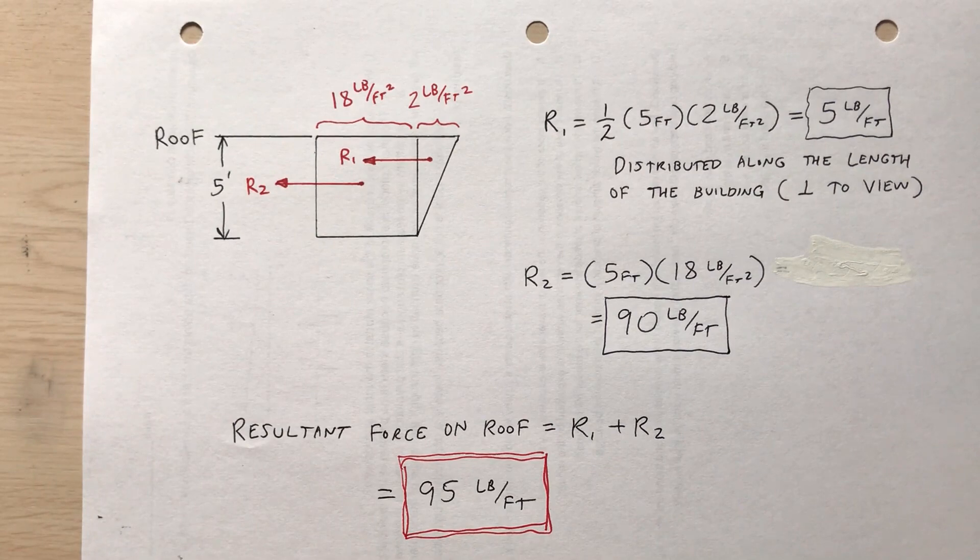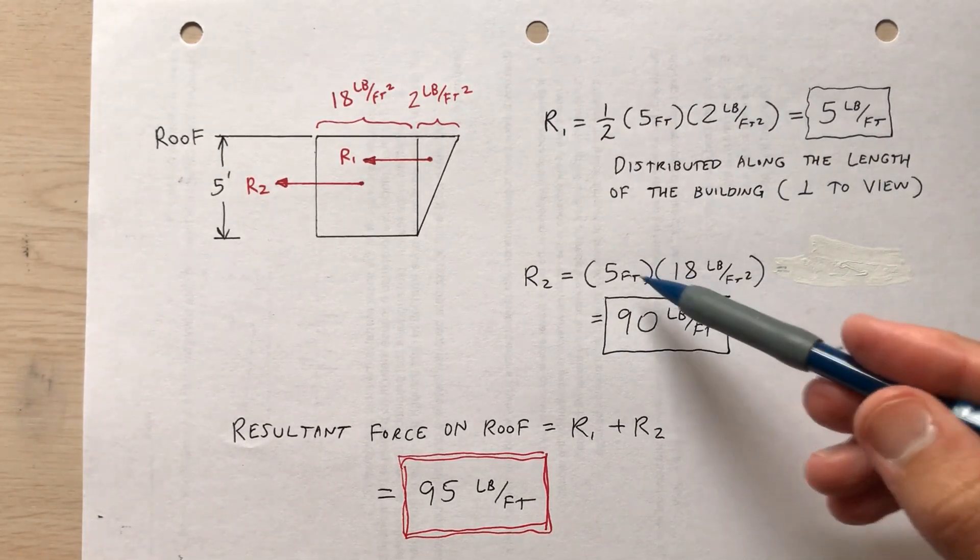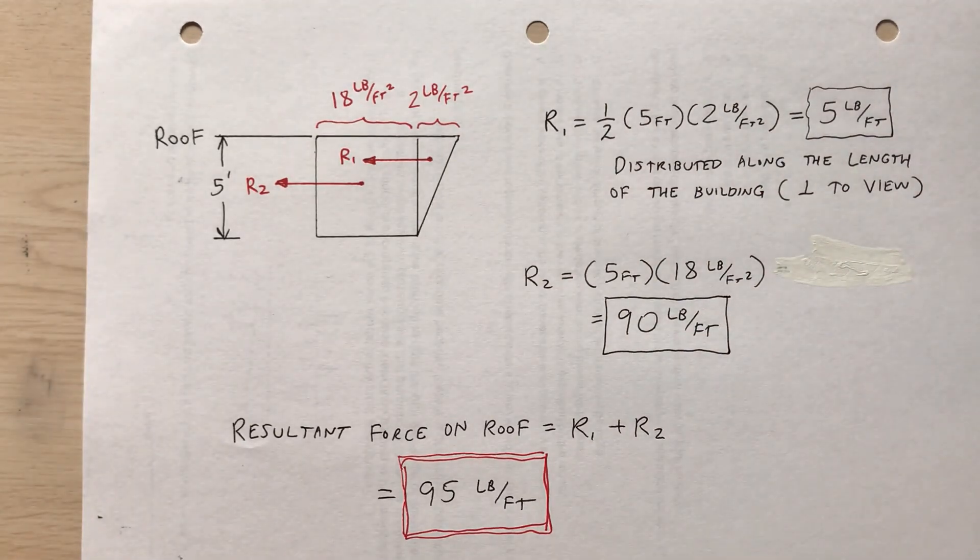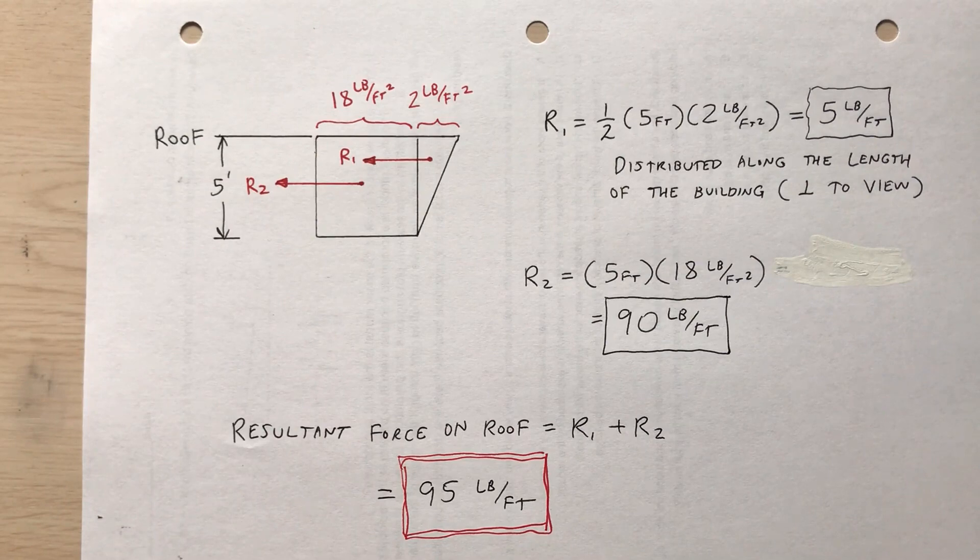So r sub one, five pounds per foot, distributed along the length of the building, perpendicular to the view that we're currently seeing it at. And then r sub two, five times 18, that's just the area of a rectangle, 90 pounds per foot. So the resultant force on the roof, r sub one plus r sub two, 95 pounds per foot, acting in and out of the paper.